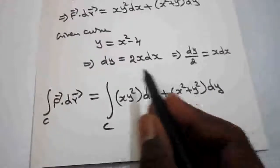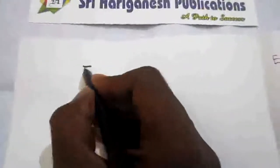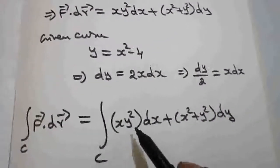So the integral can be written as integral over c of xy². You see, y² you take as usual y².